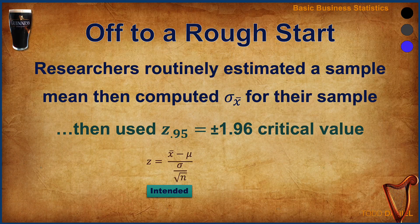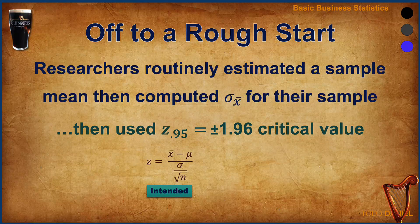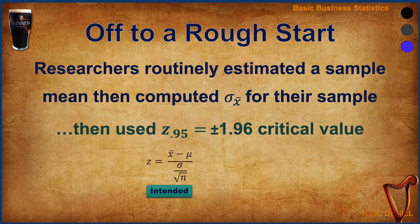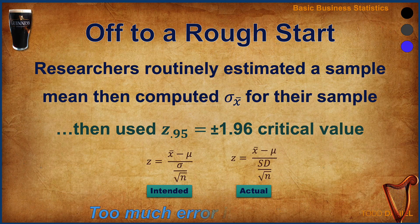They would collect a sample, use the sample mean as the point estimator for the population mean, then calculate a standard deviation of the sample based on that point estimator, and finally use a z-score of 1.96 as a critical value for determining margins of error or later in hypothesis testing. However, what they intended to calculate was not what they were actually calculating because of those point estimators.